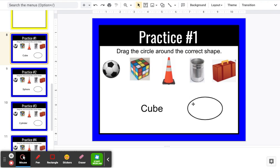Basically, you just have to put the circle around the correct shape. I put five shapes: a soccer ball, a Rubik's cube, a traffic cone, a tin can, and a suitcase.